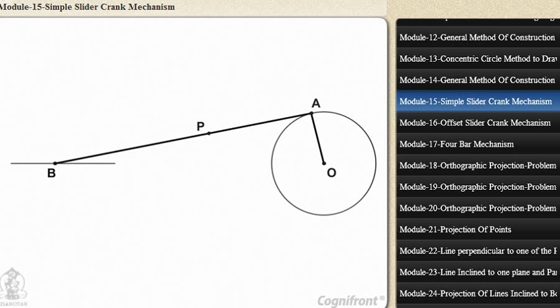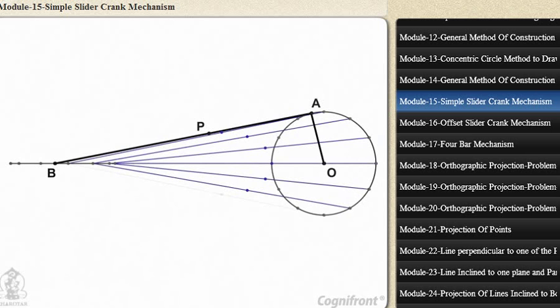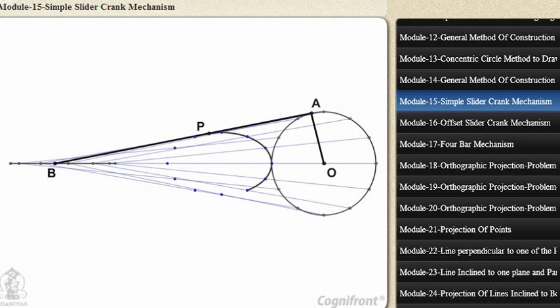First, by assuming various positions of the crank end A. Second, by obtaining the corresponding positions of end B. Third, by locating the position of P on the lines joining the first two positions. Finally, a smooth curve drawn through the located points will be the locus of P.